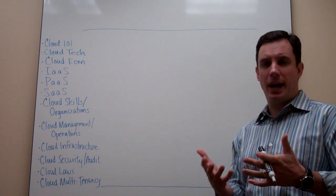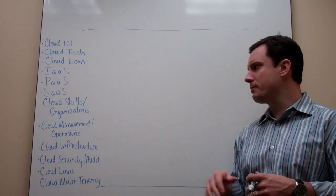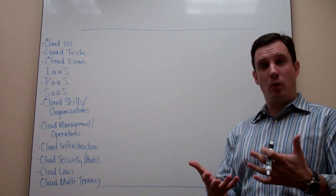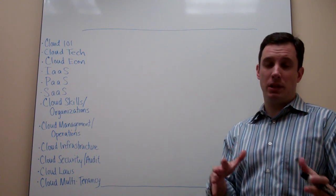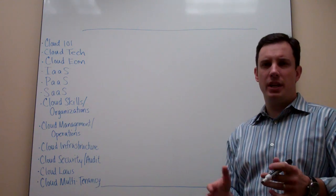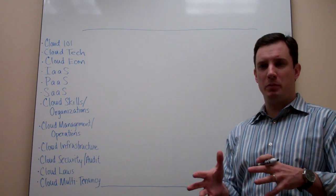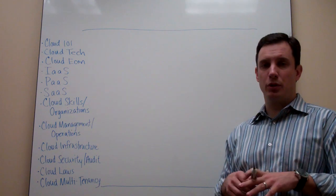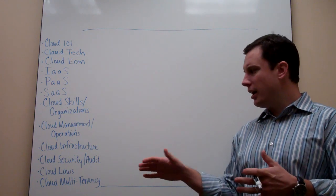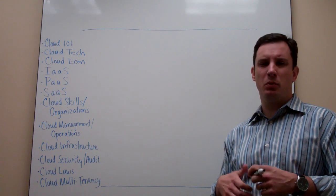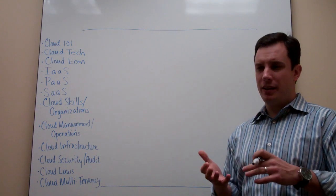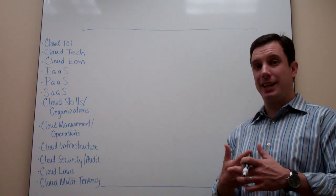We're going to talk about cloud management and operations — the operational models needed to be successful. We'll cover cloud infrastructure: the building blocks that allow people to build and deploy cloud applications, and migrate legacy applications into a more dynamic, automated, virtualized infrastructure. We'll talk about cloud security, laws and regulations, and finally, cloud from a multi-tenancy perspective — what that means for security, auditing, and infrastructure.